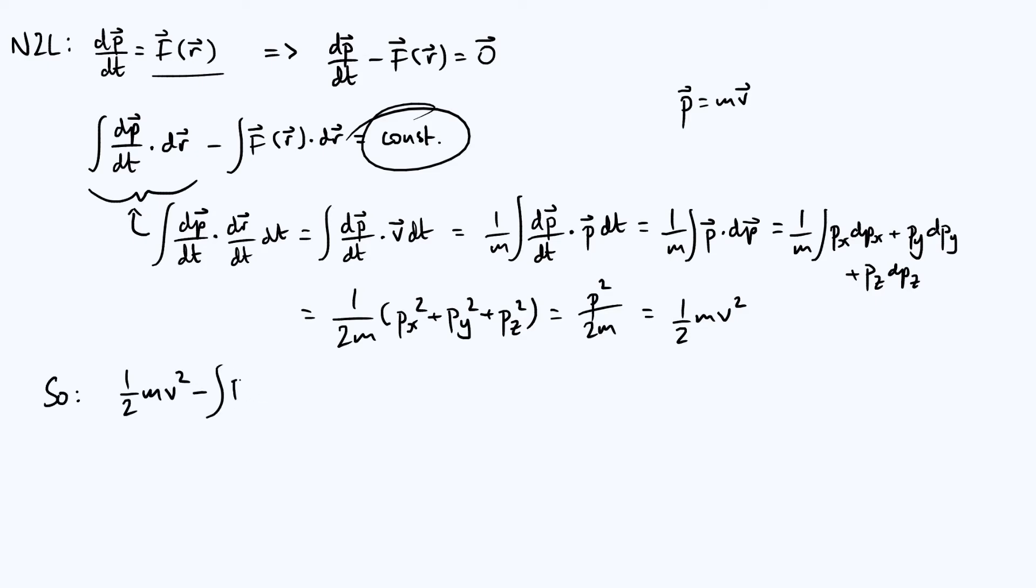At this point, you might start to suspect that this is potential energy, because this is saying that kinetic energy plus or minus this bit is equal to a constant. So we could rewrite it as ½mv² + some function U(r), which we're going to identify with the potential energy, is equal to a constant.